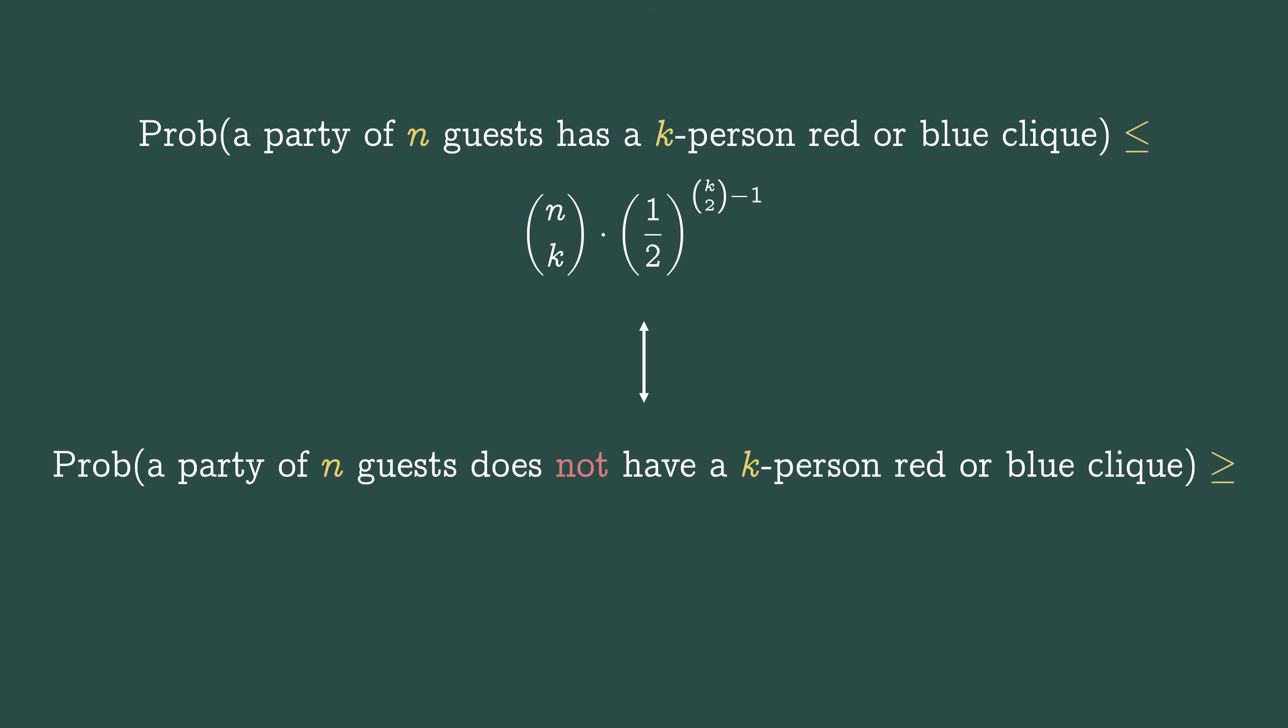The probability of not finding a k-person blue or red clique is 1 minus this, which, by the probabilistic method, means that it's possible to invite n people without creating a k-person red or blue clique.